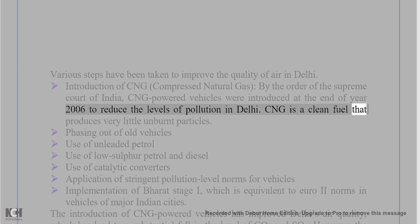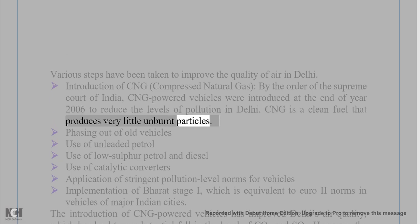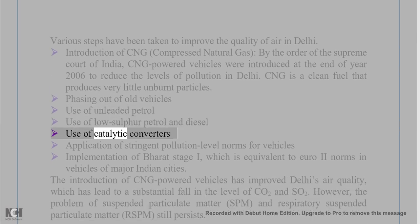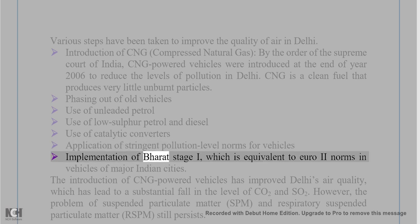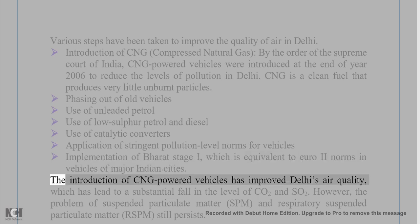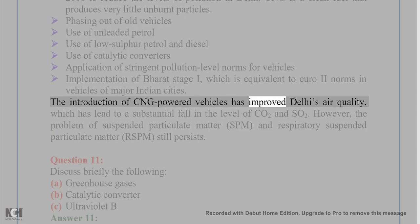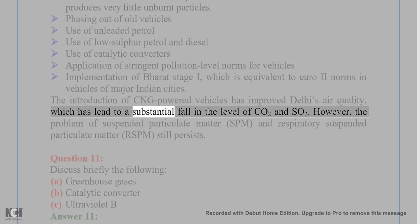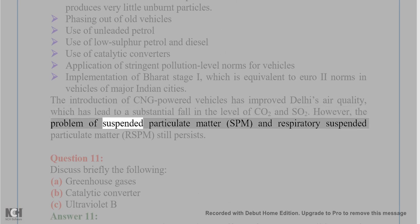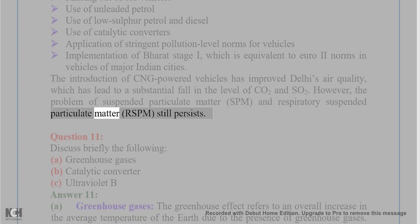CNG is a clean fuel that produces very little unburnt particles. Other measures include phasing out of old vehicles, use of unleaded petrol, use of low-sulfur petrol and diesel, use of catalytic converters, application of stringent pollution level norms for vehicles, and implementation of Bharat Stage I (equivalent to Euro 2 norms) in vehicles of major Indian cities. The introduction of CNG-powered vehicles has improved Delhi's air quality, leading to a substantial fall in the levels of CO₂ and SO₂. However, the problem of suspended particulate matter (SPM) and respiratory suspended particulate matter (RSPM) still persists.